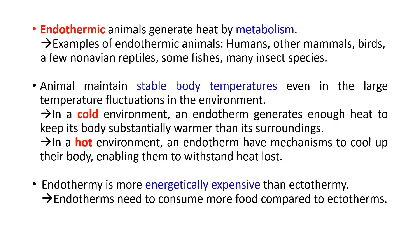Endothermic animals generate heat by metabolism. Examples include humans, other mammals, birds, few non-avian reptiles, fishes, and many insect species. These animals maintain a stable body temperature even with large temperature fluctuations in the environment. In cold environments, endotherms generate enough heat to keep warmer than their surroundings, and in hot environments they have mechanisms to cool their body. Endothermy is more energetically expensive than ectothermy because endotherms must consume more food to maintain constant body temperature.